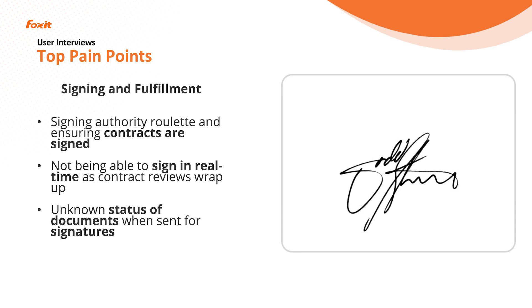And then finally, once we've done all of those things, now we've got to sign that document — signing authority roulette. I could be driving a sales process with the vendor and someone else on my side has to actually sign, so you don't actually know who these players are. Not being able to sign in real time: if we've just finished a redline session and we're all in agreement, why can't we just sign right then and there? And then the unknown status — the purgatory of once a document is sent for signature, where does it go?